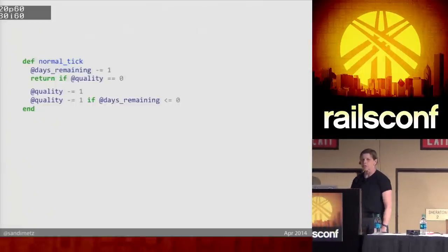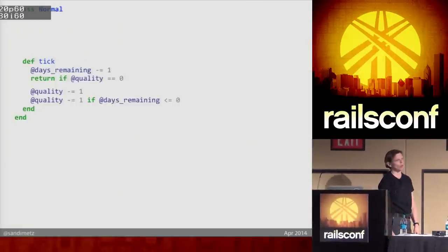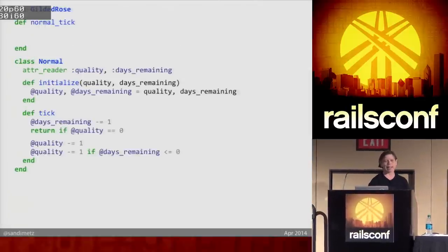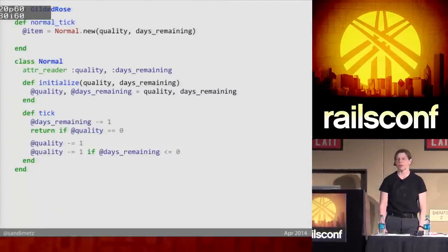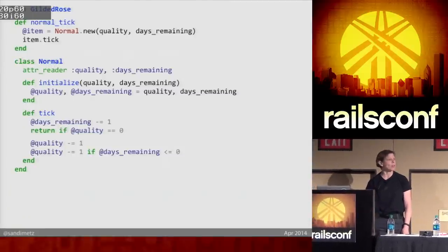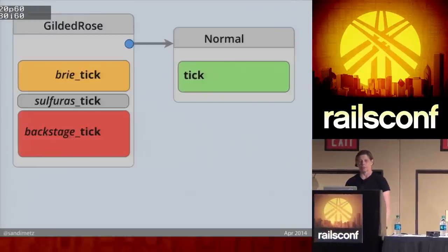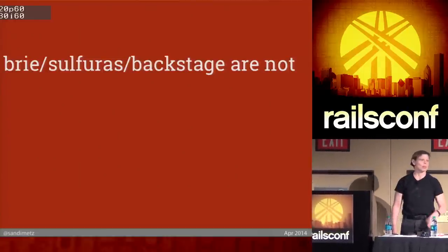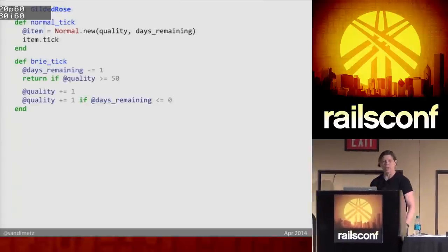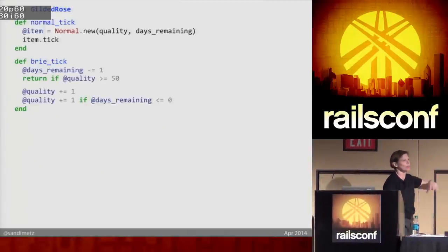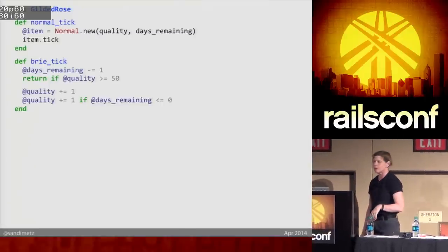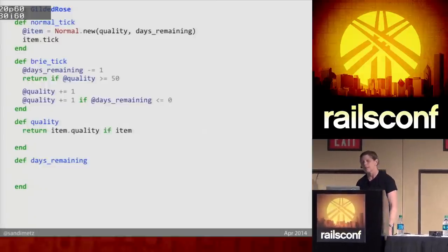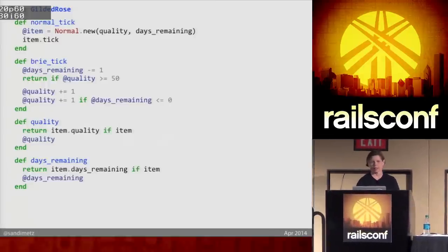It is really easy to write that code — thinking of the thing is far harder than writing the code. Here's how it looks: I've got this normal tick method. I'm just going to call it tick and put it in a Normal class. I'll throw in the initialization and attributes. I go back into Gilded Rose's normal tick method, get an instance of my new class, and forward this message. Boom — that's it. But now Normal is an object and nothing else is. And I'm about to go back on that path where I have to increase intermediate complexity. The quality and days remaining are part of the public API for Gilded Rose, so now I have to conditionally get them from the item if I have one.